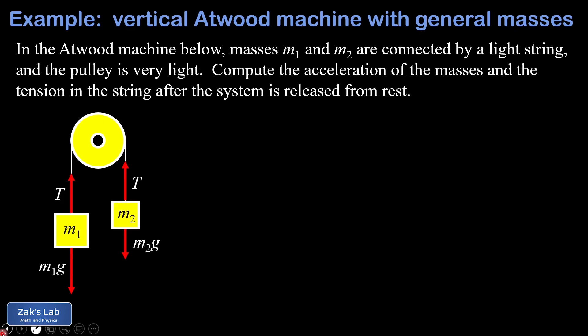At the same time, T should be a little bit bigger than m2g to create a net upward force on m2, the smaller mass. It's important to be clear about which direction is treated as positive for the analysis of each of these masses. The standard way to do this is to say the actual direction of acceleration is positive.